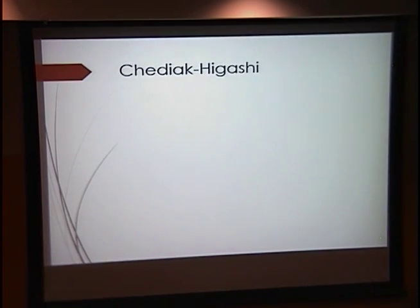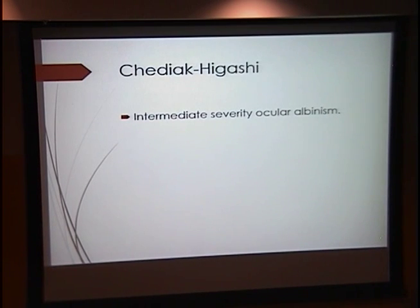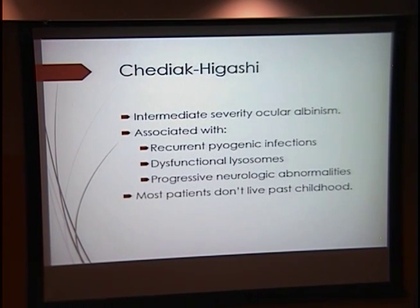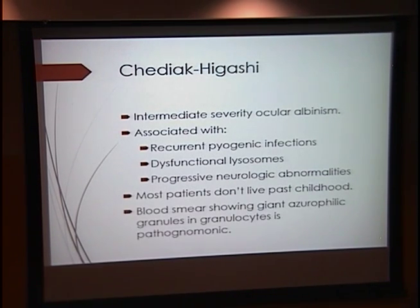Chediak-Higashi syndrome causes intermediate severity ocular albinism. It is associated with recurrent pyogenic infections, dysfunctional lysosomes, and progressive neurologic abnormalities. Unfortunately, most of these patients don't live past childhood. You can diagnose this by visualizing giant azurophilic granules in the granulocytes.